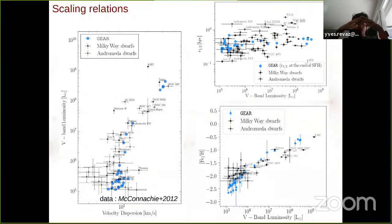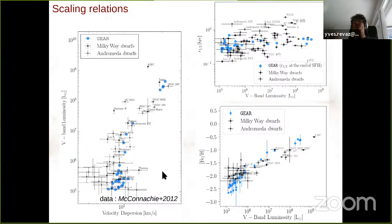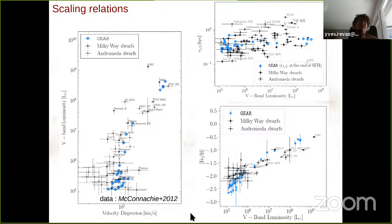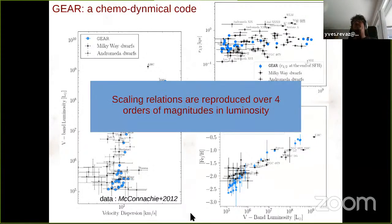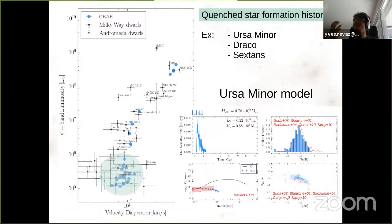Once we have a large number of zoom-in simulated dwarf galaxies, we check whether they reproduce scaling relations. The black points are observed local group galaxies, the blue points are our simulations. We reproduce the V-band luminosity as a function of velocity dispersion, metallicity as a function of luminosity, and the half-light radius as a function of luminosity — all over four orders of magnitude. But we wanted to go much further and look at more detailed properties: star formation histories, metallicity distribution functions, velocity dispersion profiles, and chemical abundances.